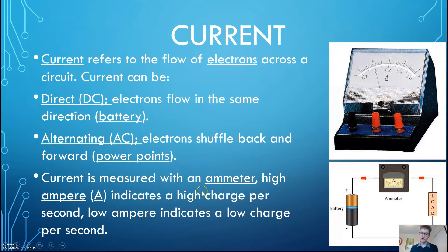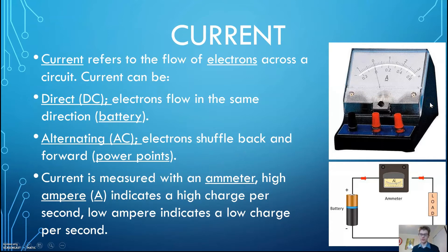Current is measured with an ammeter and is measured in amperes, or amps for short. Amps are an indication of how much charge is flowing through a space per second. So you can have a high charge flowing through space per second — that's high amps — or you can have low amps. That's a measurement of current.